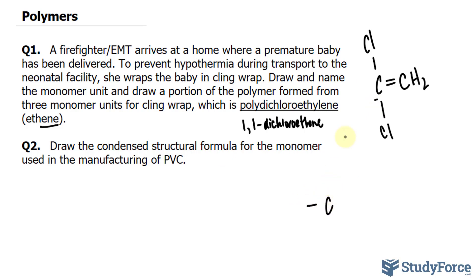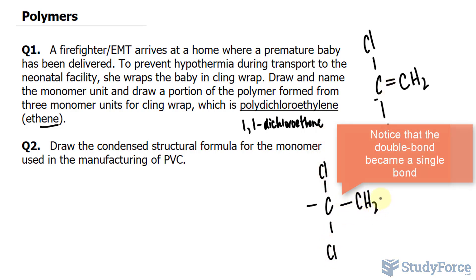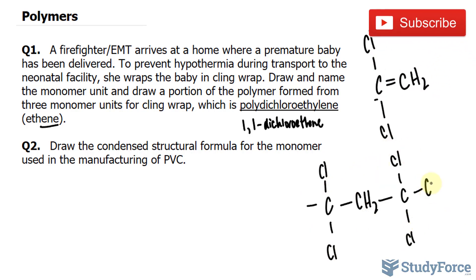We have this part. I'll rewrite it. We'll write this in condensed form. So this will be CH2, then again, the carbon with two chlorines. So that's one monomer, that's another, and one more. I'll do it over here.